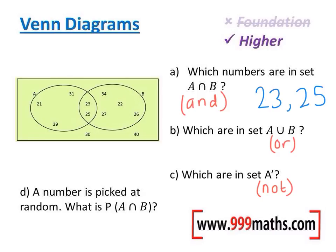Question B: which are in set A or B? Well, 23 and 25 are also in A or B, but all of the numbers in this circle are actually in A, and all of the numbers in this one are in B. So any number inside those two circles would be in A or B. So from the left-hand side I've got 21, 31, 29. From the middle we've got 23 and 25. And from the right-hand side, B only: 34, 27, 22, and 26.